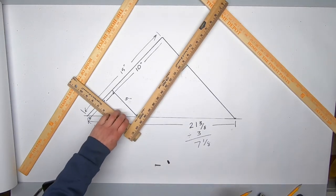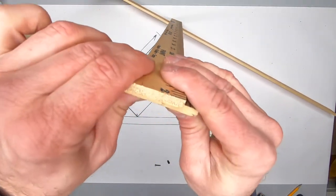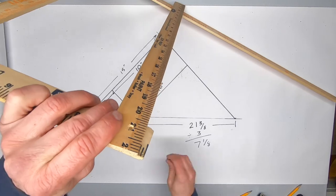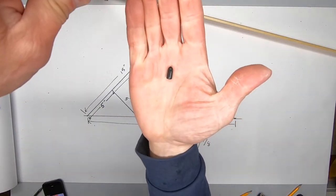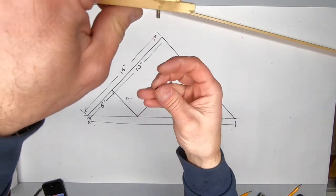This angle on the pantograph is called the tracer. It's the part we're going to use to trace around the original drawing. I'm using a machine screw with a rubber cap. You can also use a pencil, a screw, or even a screw eye works well.